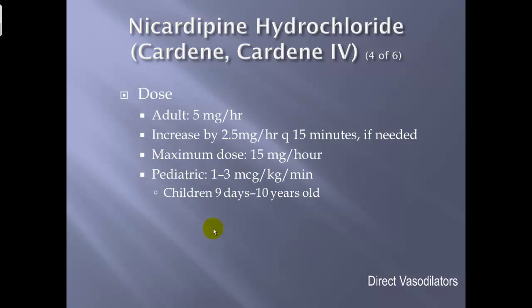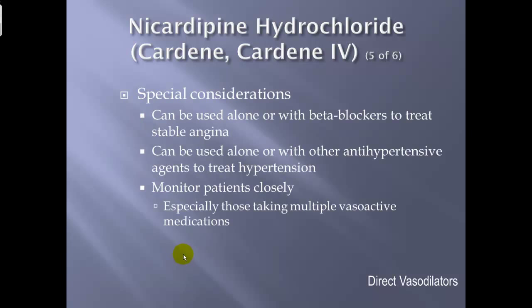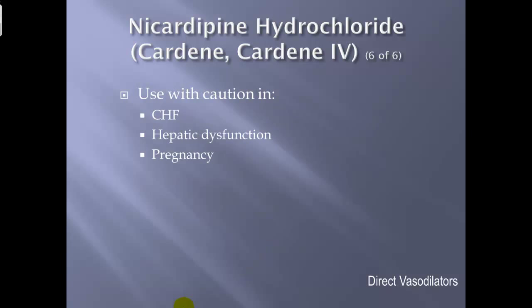Dose for Cardene: adults start at 5 mg/hour; increase by 2.5 mg/hour every 15 minutes as needed; maximum dose is 15 mg/hour. Pediatric dose: 1 to 3 mcg/kg/minute, for children 9 days to 10 years old — anyone over 10 is considered an adult. Special considerations: can be used alone or with beta blockers for stable angina; can be combined with other antihypertensives for hypertension; monitor closely, especially patients on multiple vasoactive drugs; use caution in CHF, hepatic dysfunction, and pregnancy.